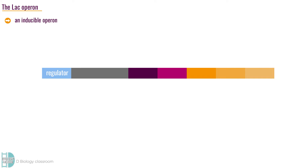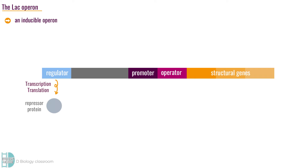The lac operon is an inducible operon. It contains a regulator, a promoter, an operator, and structural genes. The regulator, or regulatory gene, codes for a repressor protein. It is produced all the time and its concentration does not vary in response to molecular signals.